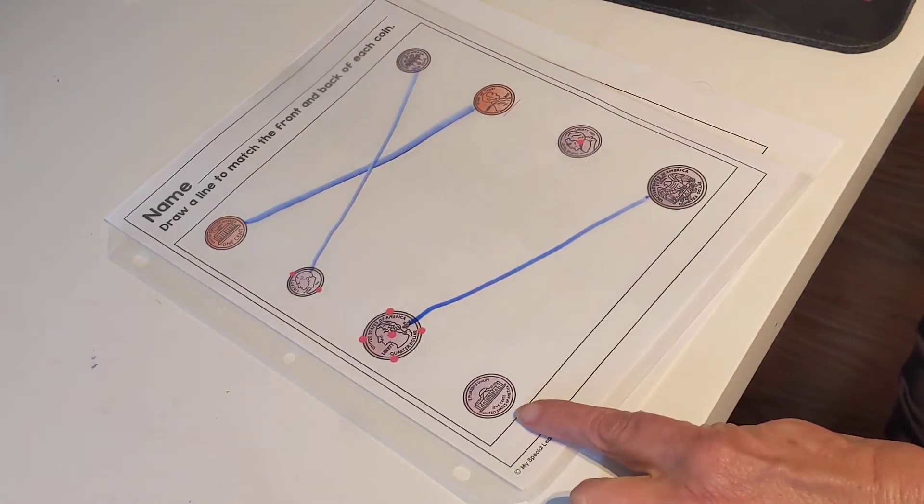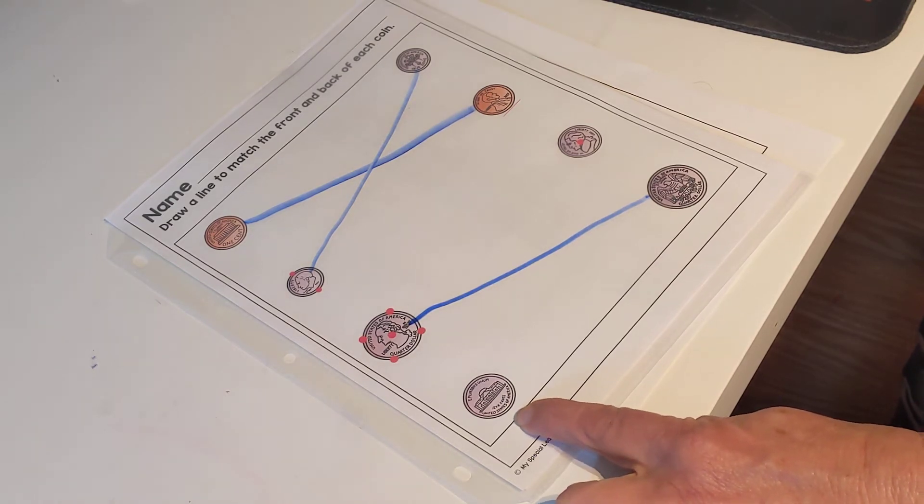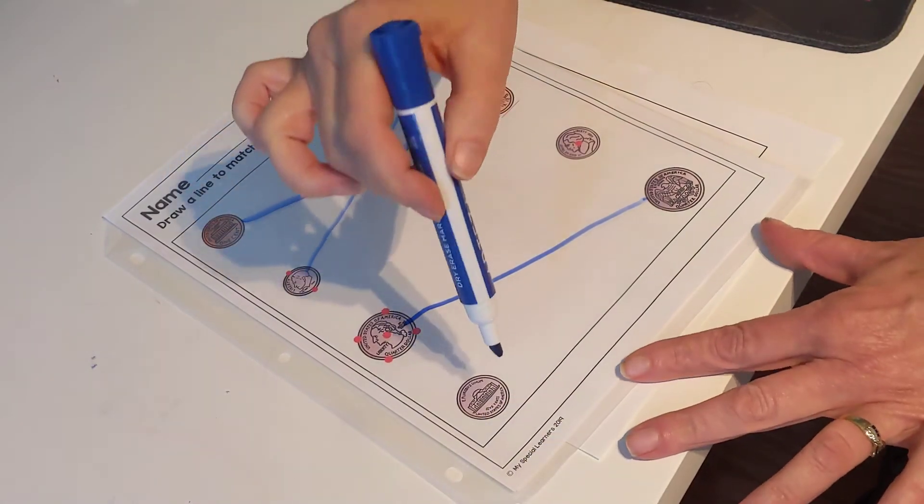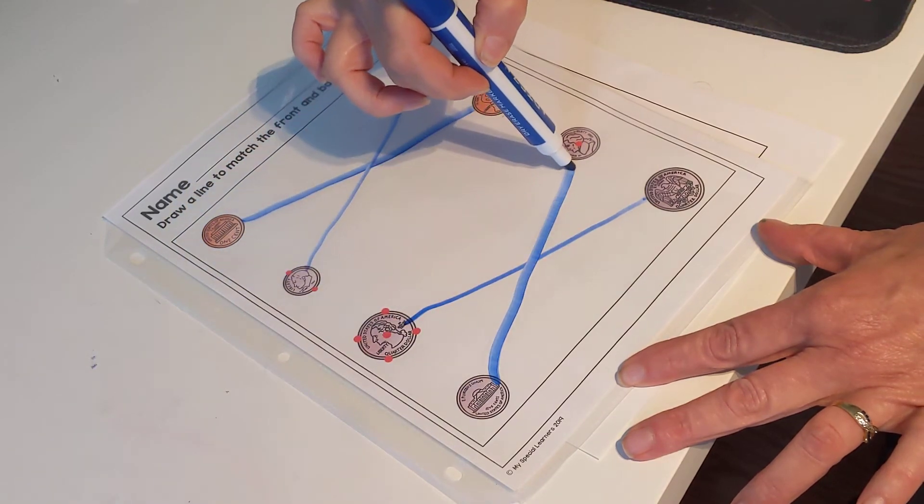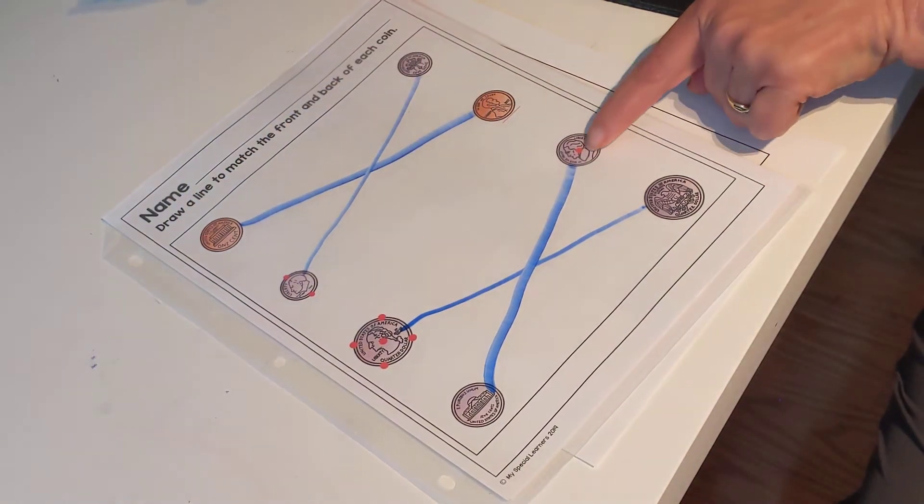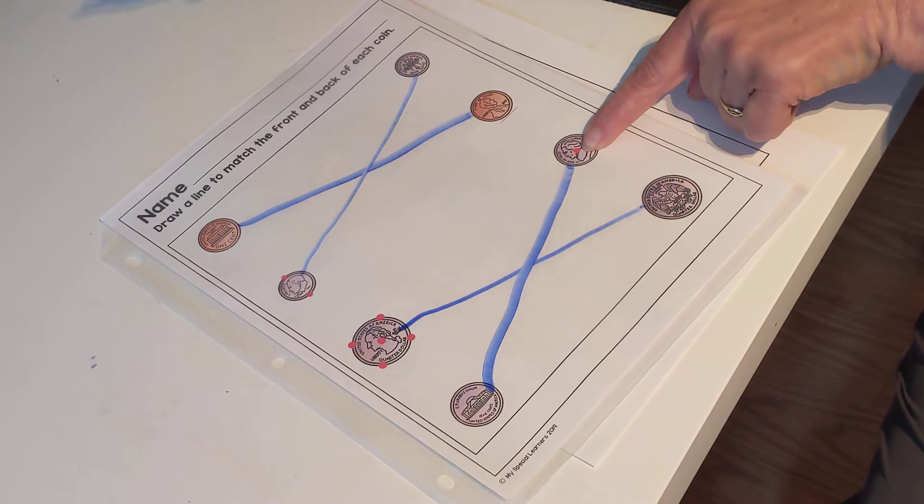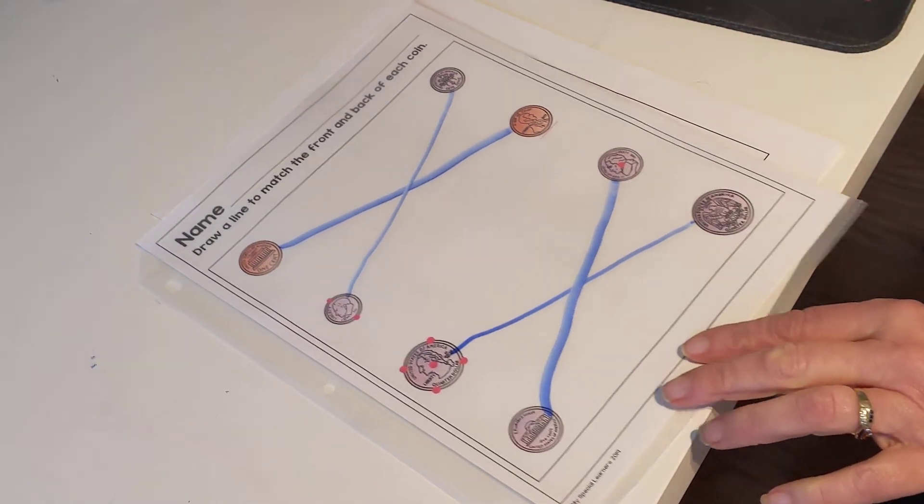And now we see the back of the nickel. And there are no touch points here. Who remembers how many touch points on the nickel? Well, let's find the front of the nickel and we can find out. Here's the front of the nickel. One touch point. So how much is our nickel worth? Five cents. Very good.